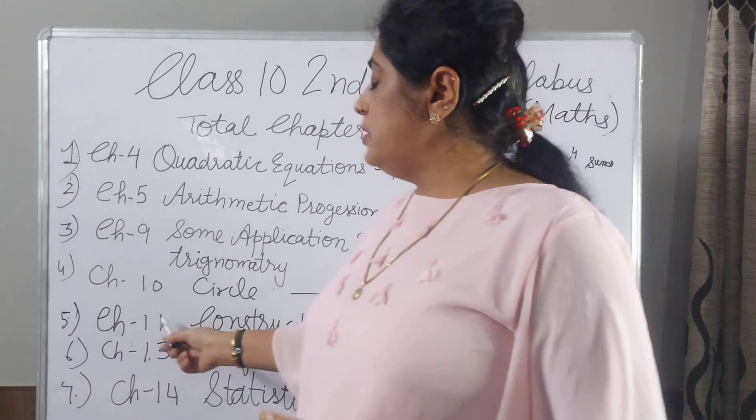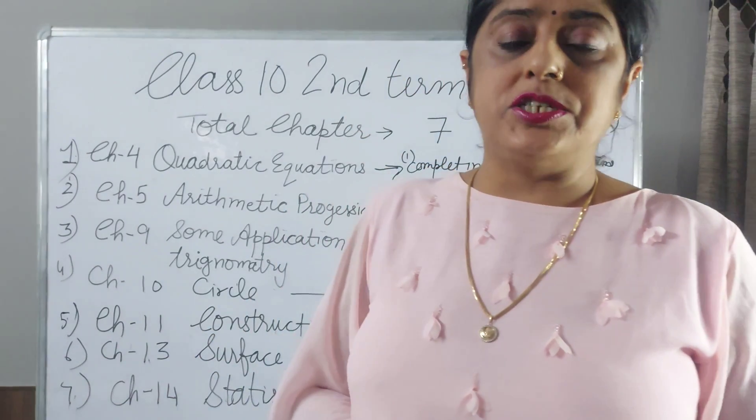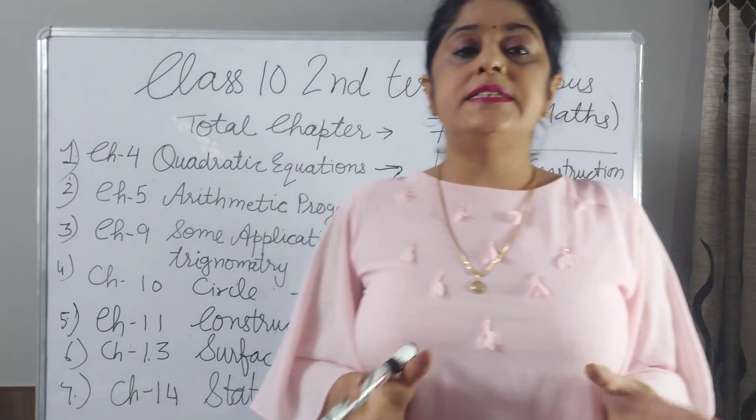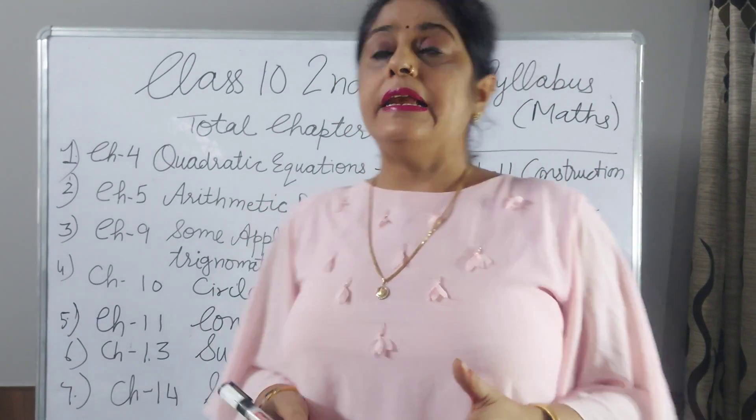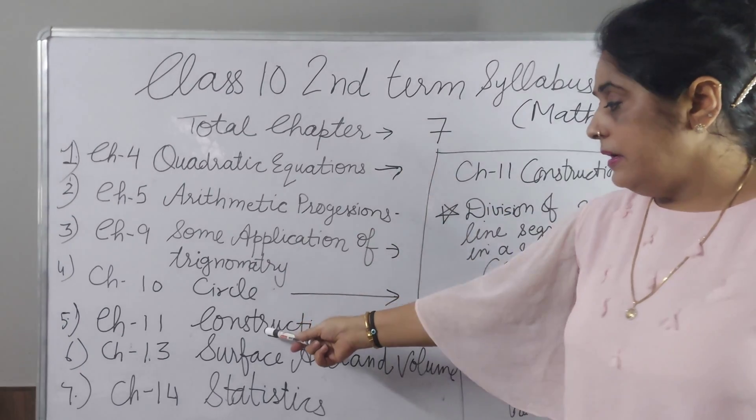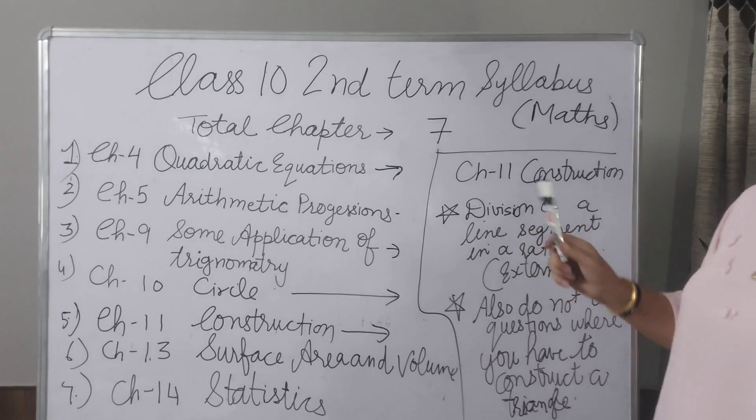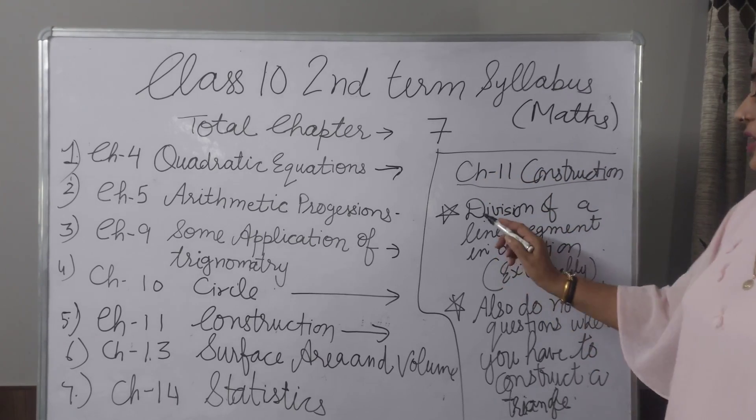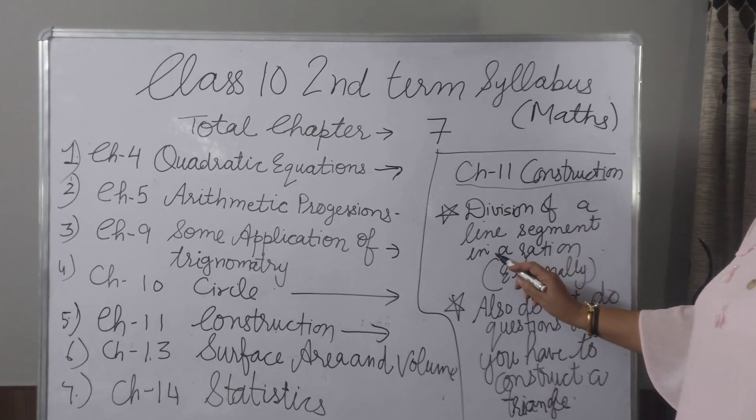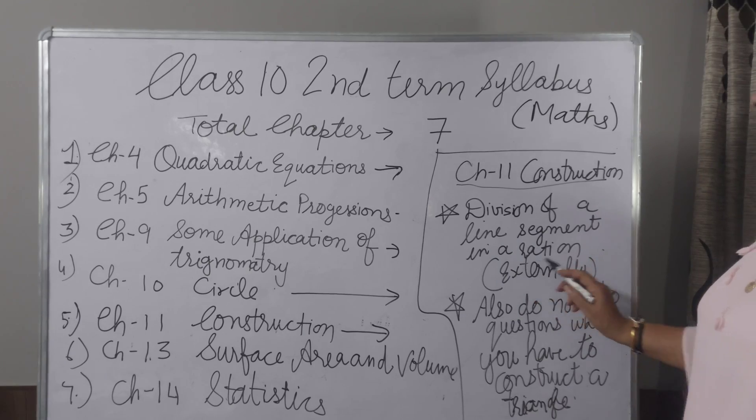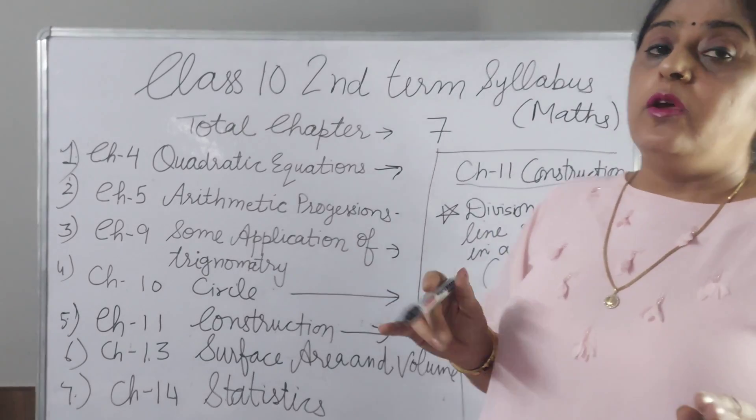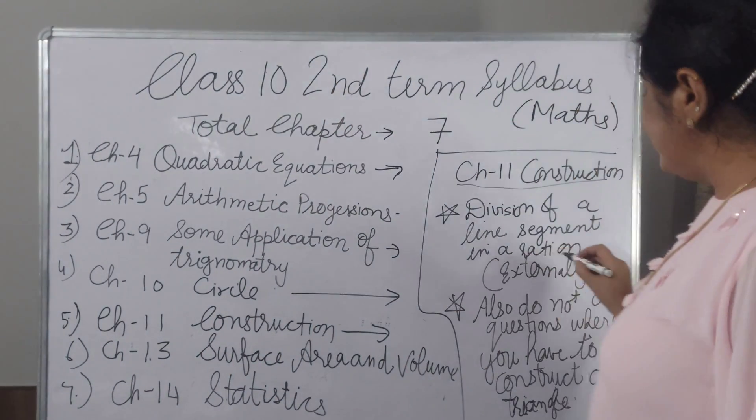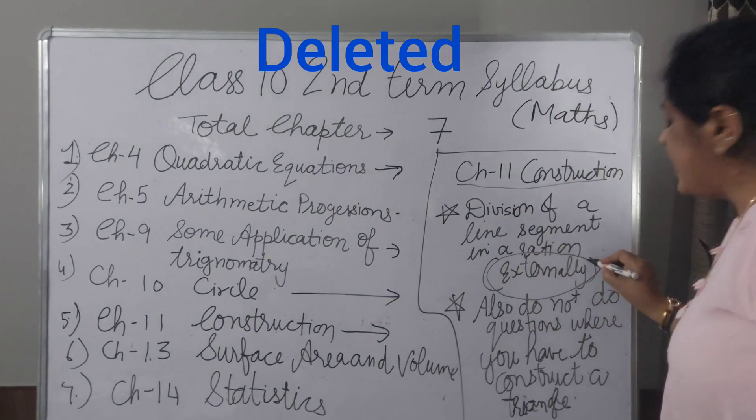Now I will tell about Chapter 11 Construction. Now I am telling about which syllabus is deleted from Chapter 11. From Chapter 11 Construction what is deleted? Division of a line segment in a ratio externally. There are two types. We have to draw line segment internally or one is externally. Only this externally you have to draw the line segment. That part is deleted. Internal you have to do.